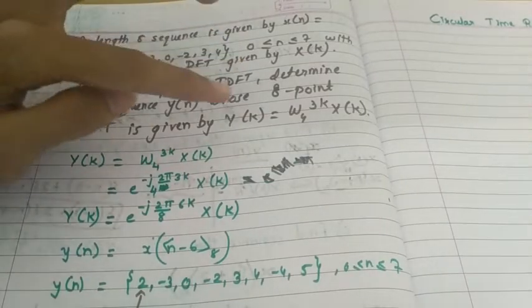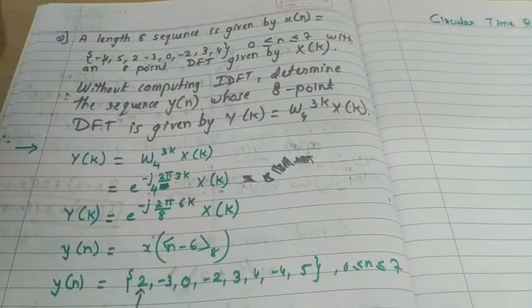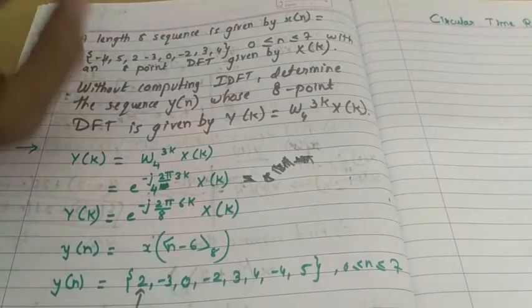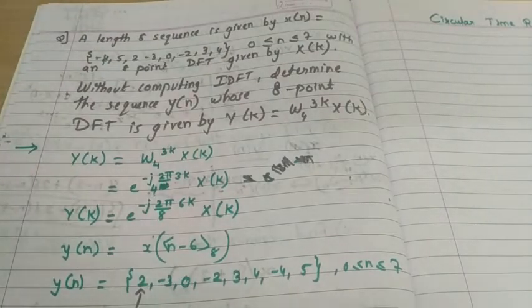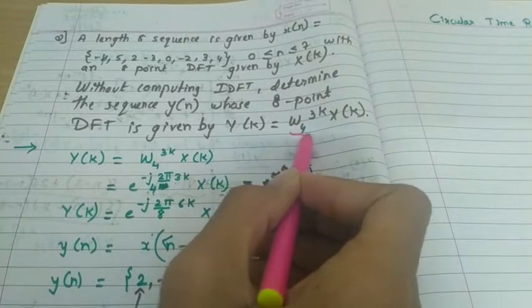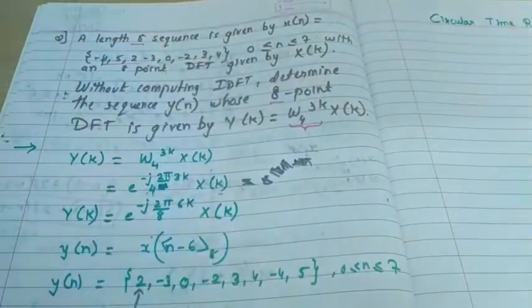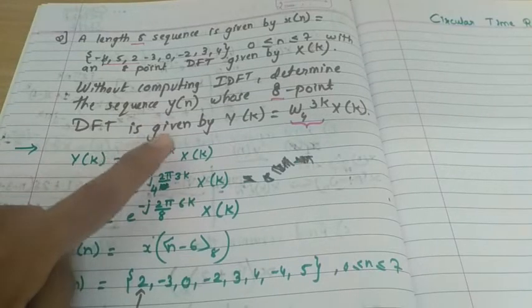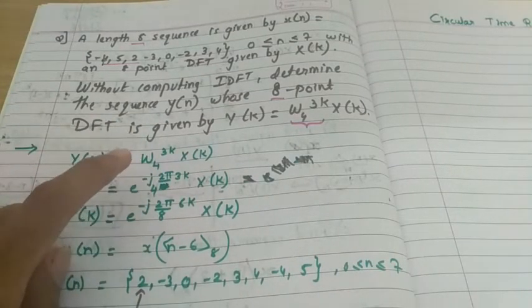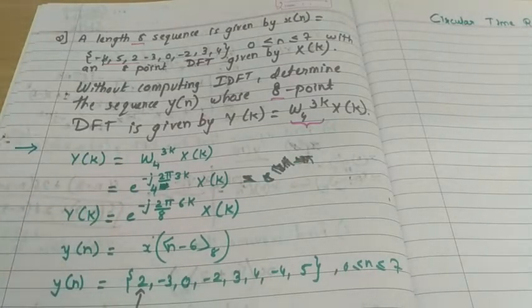Some relation is given between Y of k and X of k. The first point to note is that the question involves W_N where N is 4, but the whole question is about the 8-point DFT. Our first task is to write and expand the expression — substitute the value of W, the twiddle factor — and the target is to convert it into an 8-point DFT form.